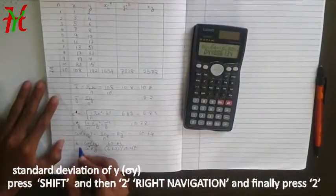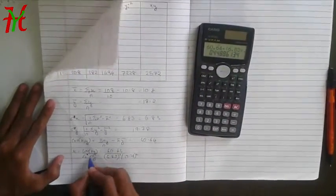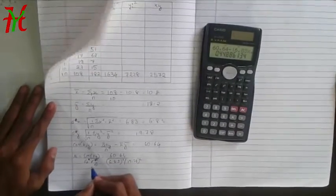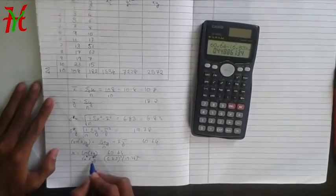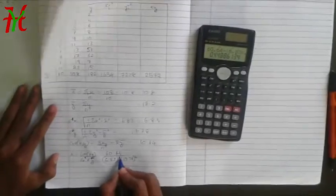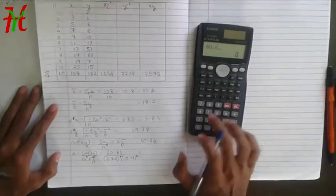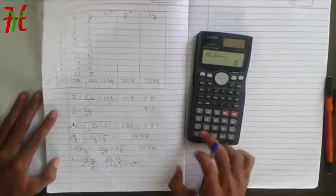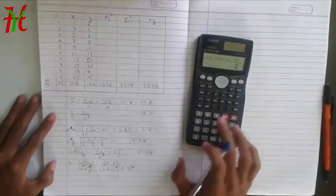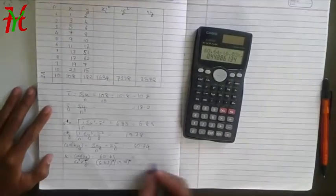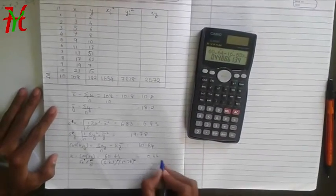R is equal to covariance XY upon standard deviation sigma X, upon covariance XY upon sigma X into sigma Y. This we get by 60.64 divided by parenthesis 6.83 into 19.78 equals, and we get the value as 0.4488.